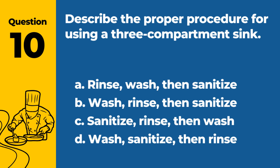Question 10. Describe the proper procedure for using a three-compartment sink. A. Rinse, wash, then sanitize. B. Wash, rinse, then sanitize. C. Sanitize, rinse, then wash. D. Wash, sanitize, then rinse. Answer: B. Wash, rinse, then sanitize. The proper procedure for using a three-compartment sink is to wash, rinse, then sanitize.